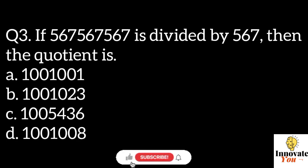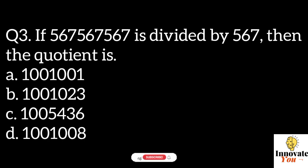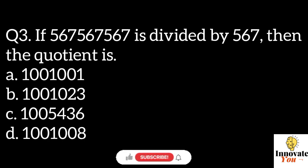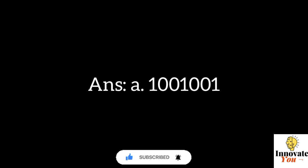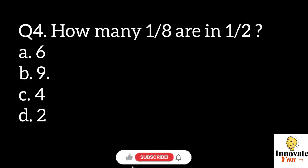Question 3. If 567567567 is divided by 567, then the quotient is: A. 1001001001. B. 1001023. C. 1005436. D. 1001008. Answer A: 1001001.